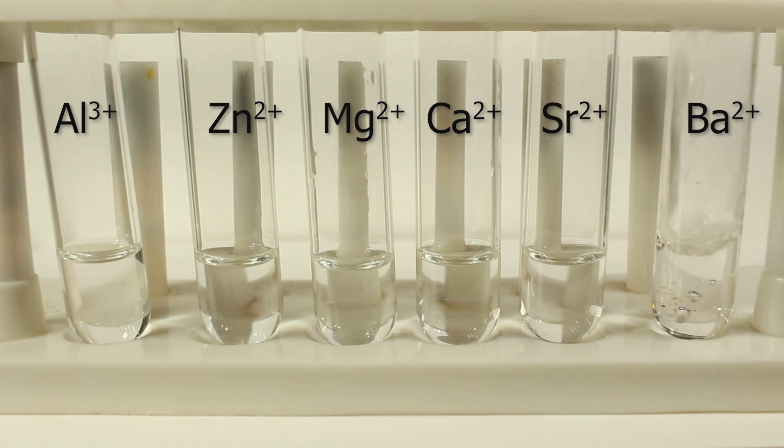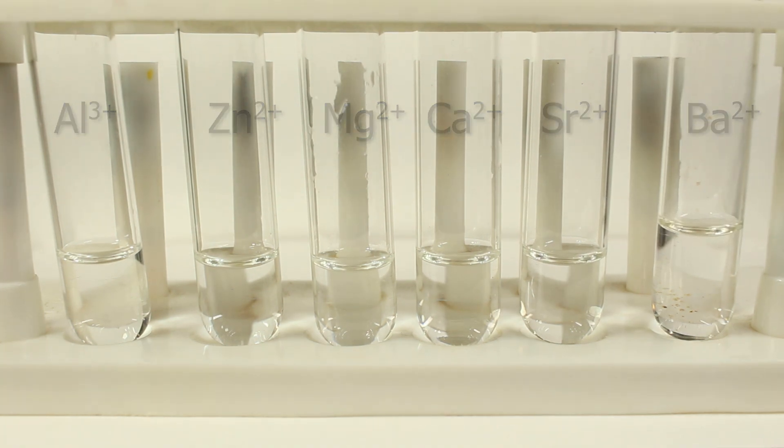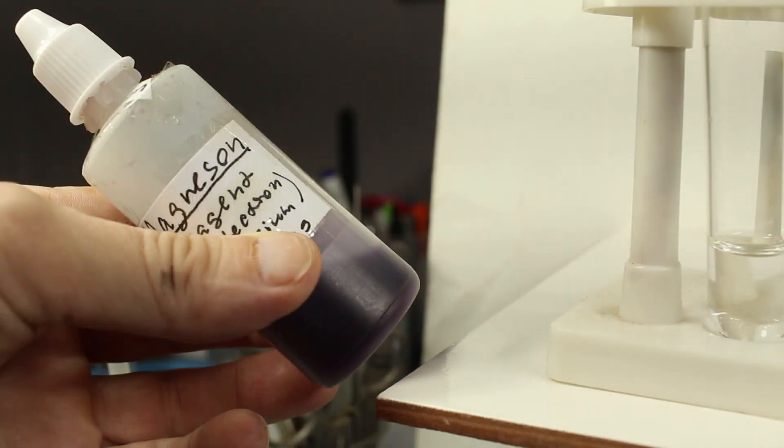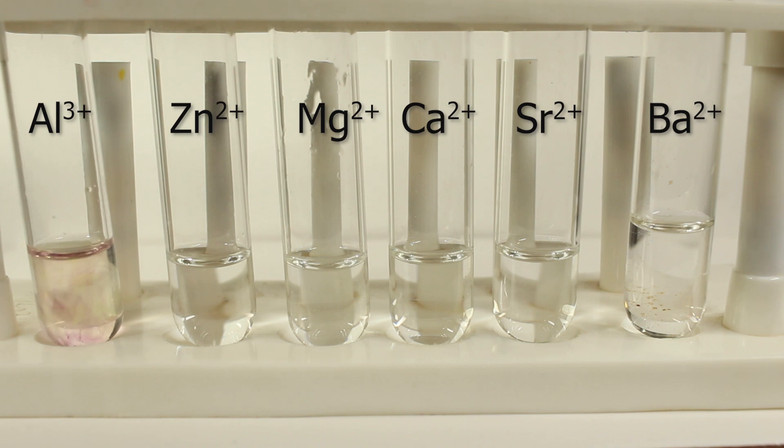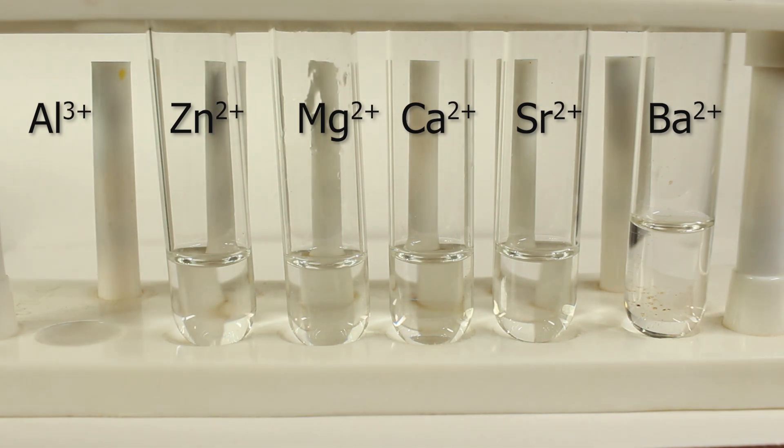Now it's time for magnesium reagent or azoviolet. It's alkaline, so I expect the precipitates of hydroxides. Here aluminum hydroxide is precipitated.